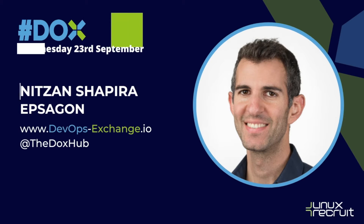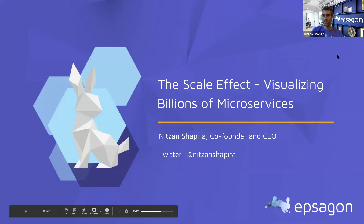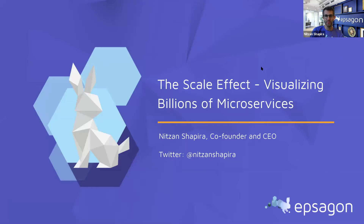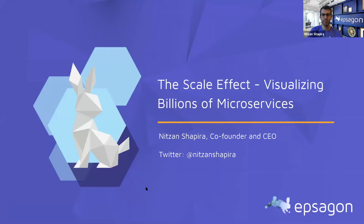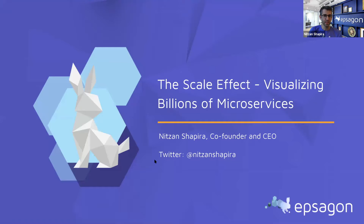Hi everyone, I'm Nisan Shapira. I'm one of the founders and the CEO of Epsagon. I'm based in New York City, in Manhattan, in our office. I'm going to talk about the scale effect — what do we do when we have very high scale, very complex systems, and how do we visualize microservice-based systems in order to understand them better, to monitor and troubleshoot issues.